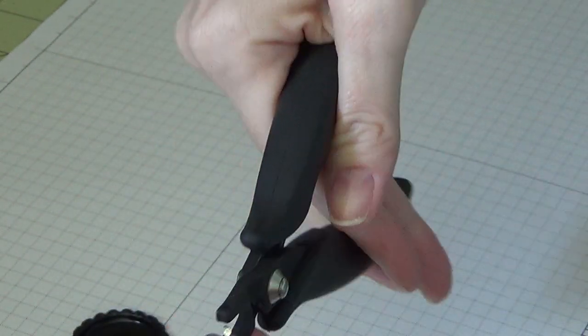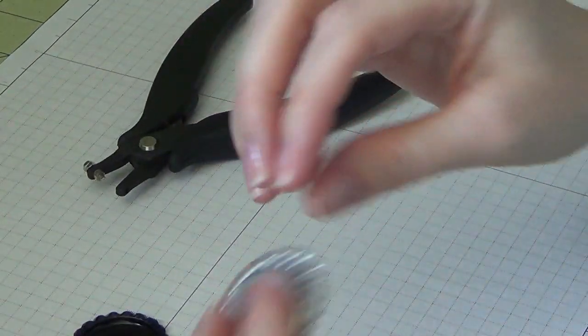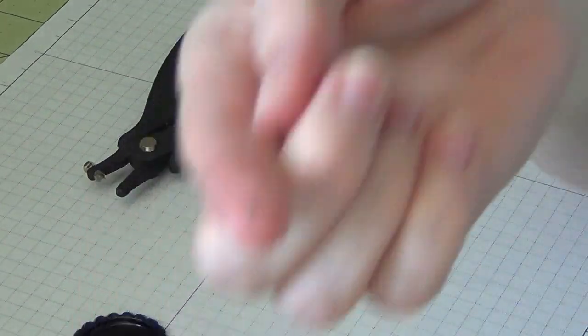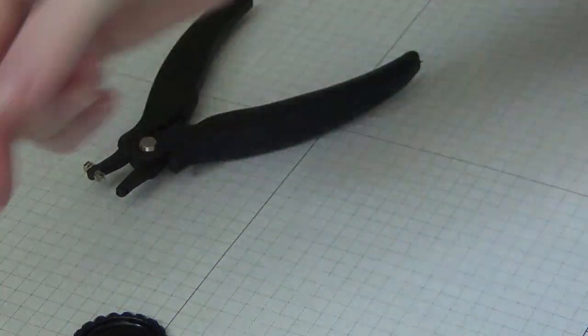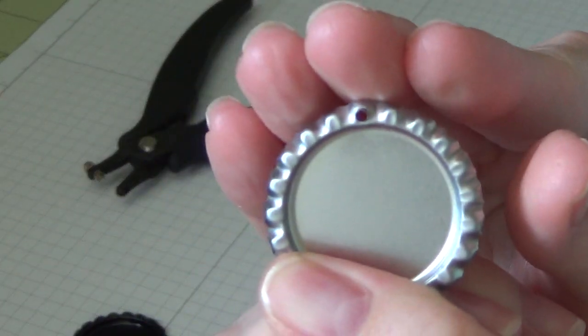You can hear it kind of snap. Then you pull it out. I don't know where the little—there it is. The little piece of aluminum will just pop out, and then there you have a little hole.